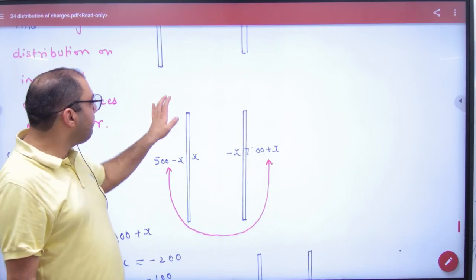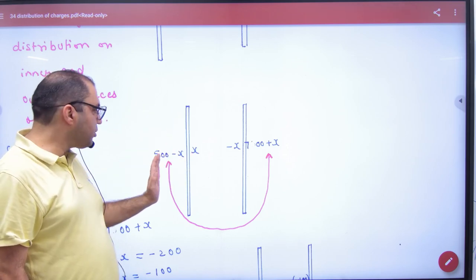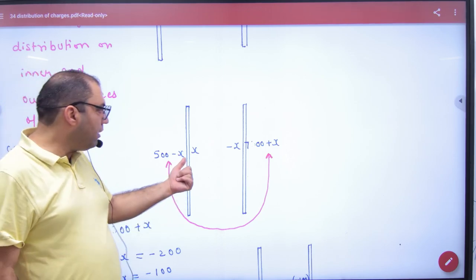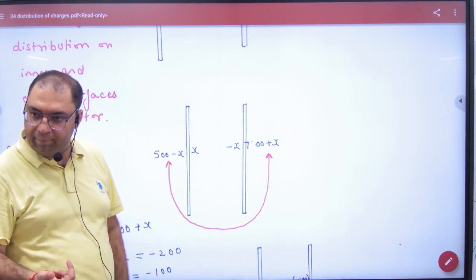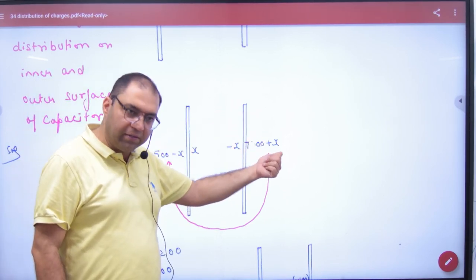Let's assume that the charge here is x. Because the total charge is 500, the charge will be 500 minus x. If you add the total, you get 500. And here, by induction it is minus x. If it is minus x and total is 700, then this side is 700 plus x. Simple.